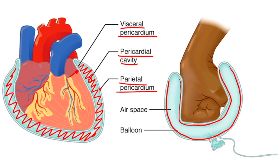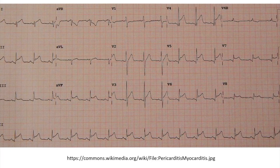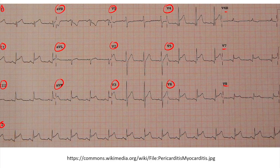If there is pericardial inflammation, that inflammation is generally going to be seen all throughout every side of the heart — visible at just about every angle. That's important because the EKG leads are simply looking at electrical conduction from different angles. On the EKG, we can identify the QRS complex (the spike), the PR interval before it, and the ST segment after it. In the case of pericarditis, you notice an ST segment elevation in just about all of the leads.